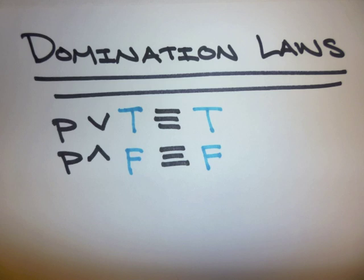The domination laws: P or true is logically equivalent to true. P and false is logically equivalent to false.